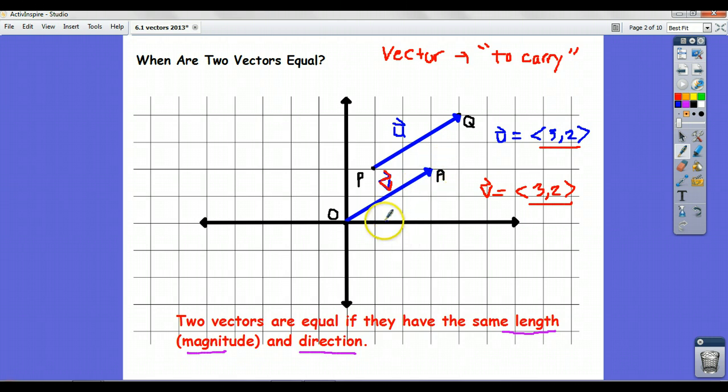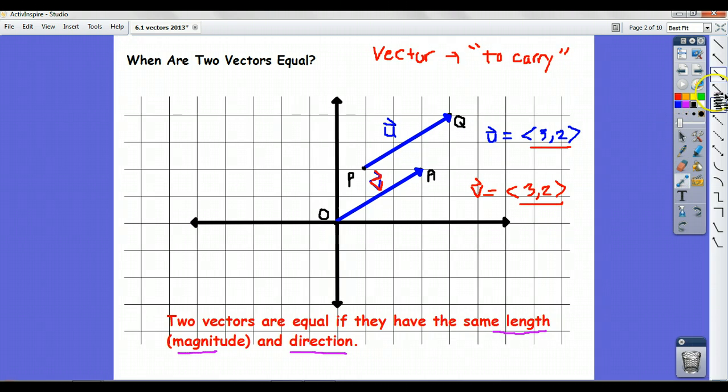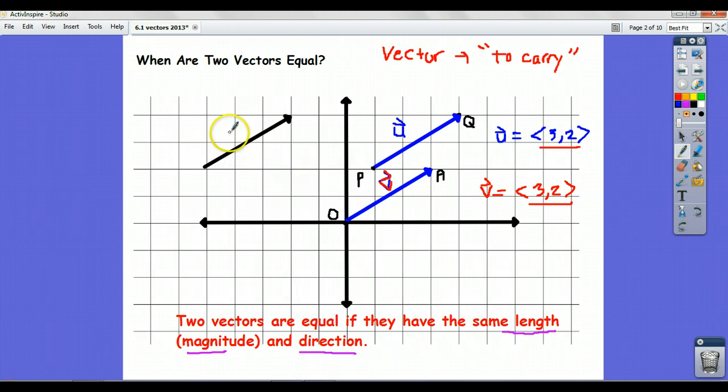So the key thing to keep in mind is that when it comes to vectors, the position is completely irrelevant. Where the vectors are on the screen is completely irrelevant. This vector here I'm about to draw is equal to those other two because I'm going to draw it taking you three to the right and up two. So that vector, we'll call it n, is equal to all of these vectors. u equals v equals n. They all have the same length and direction. It doesn't matter where they're located.